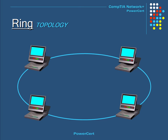This is called the ring topology. A ring topology is a type of network configuration where each computer is connected to each other in the shape of a closed loop or ring. Every computer on this ring has exactly two neighbors for communication purposes. Each data packet is sent around the ring until it reaches its final destination. This kind of topology is rarely used today. The advantage is that they are easy to install and troubleshoot. However, if just one computer goes down or if there is a single break in the cable, all data flow would be disrupted.